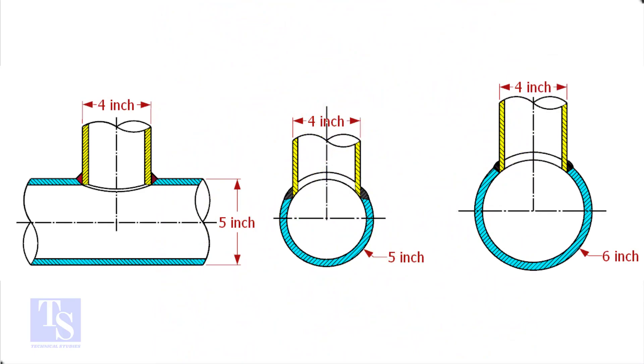In the case of stub-in connections, the branch pipe size is one or more units less than the header size. Suppose both the header and the branch size are the same, a stub-in connection is not possible.